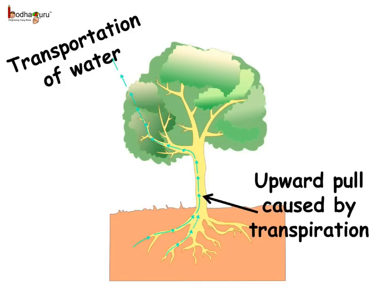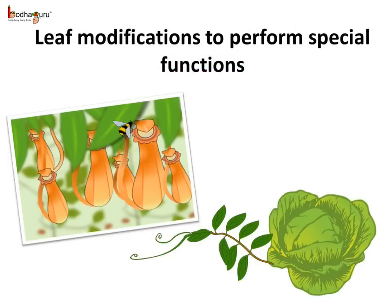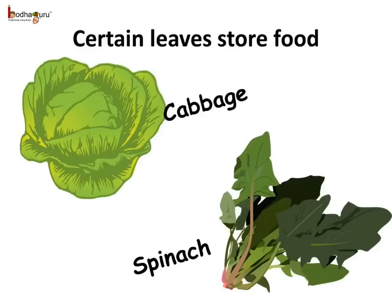Transpiration also helps in the water cycle of nature by increasing humidity, which causes rain later. Apart from these tasks, in some plants the leaves perform some special tasks. In certain plants such as cabbage, spinach, lettuce, etc., the leaves store food.